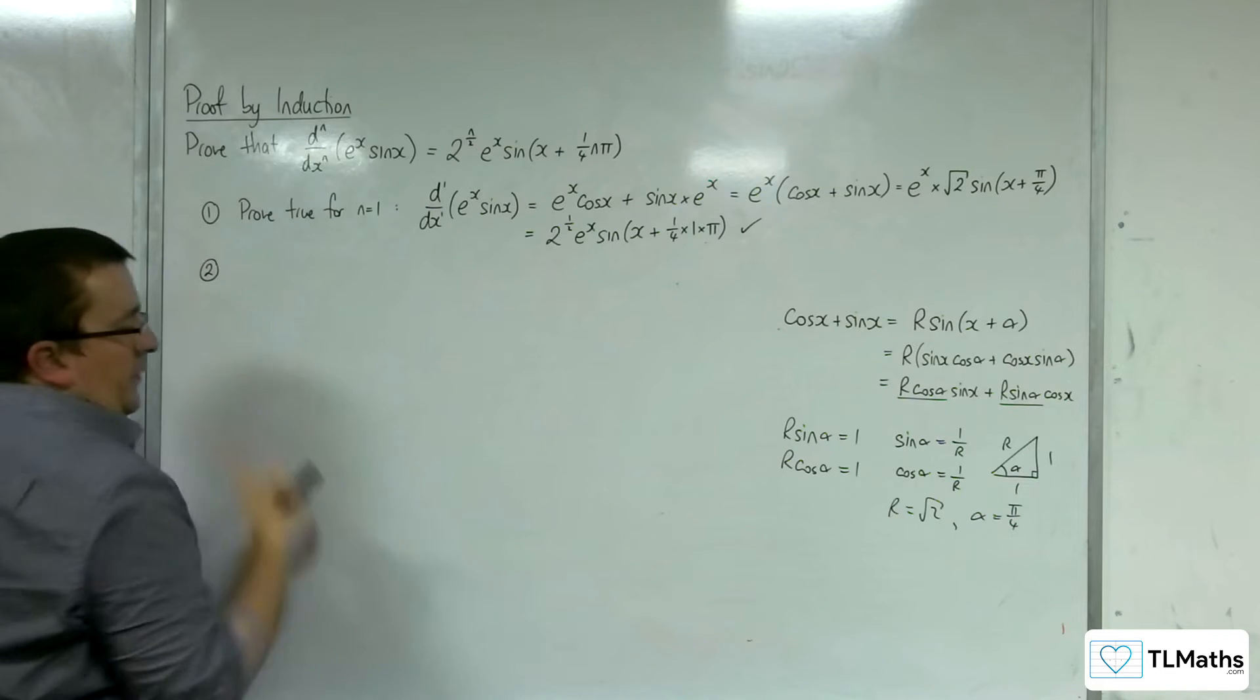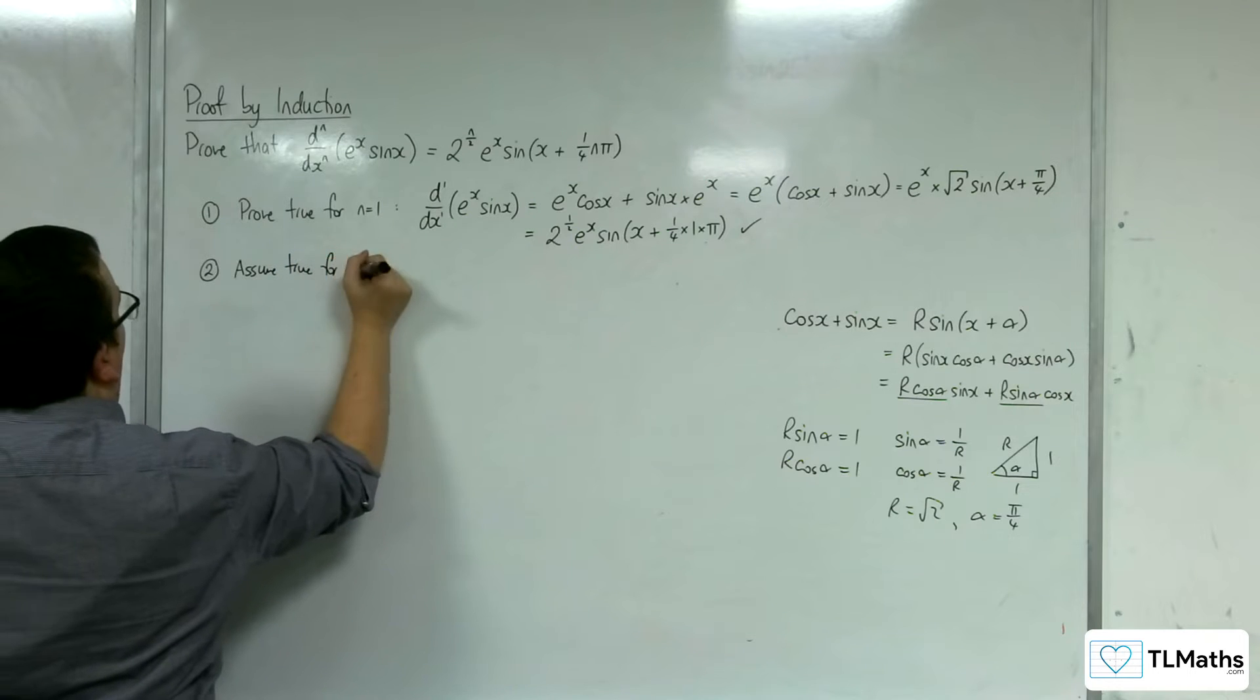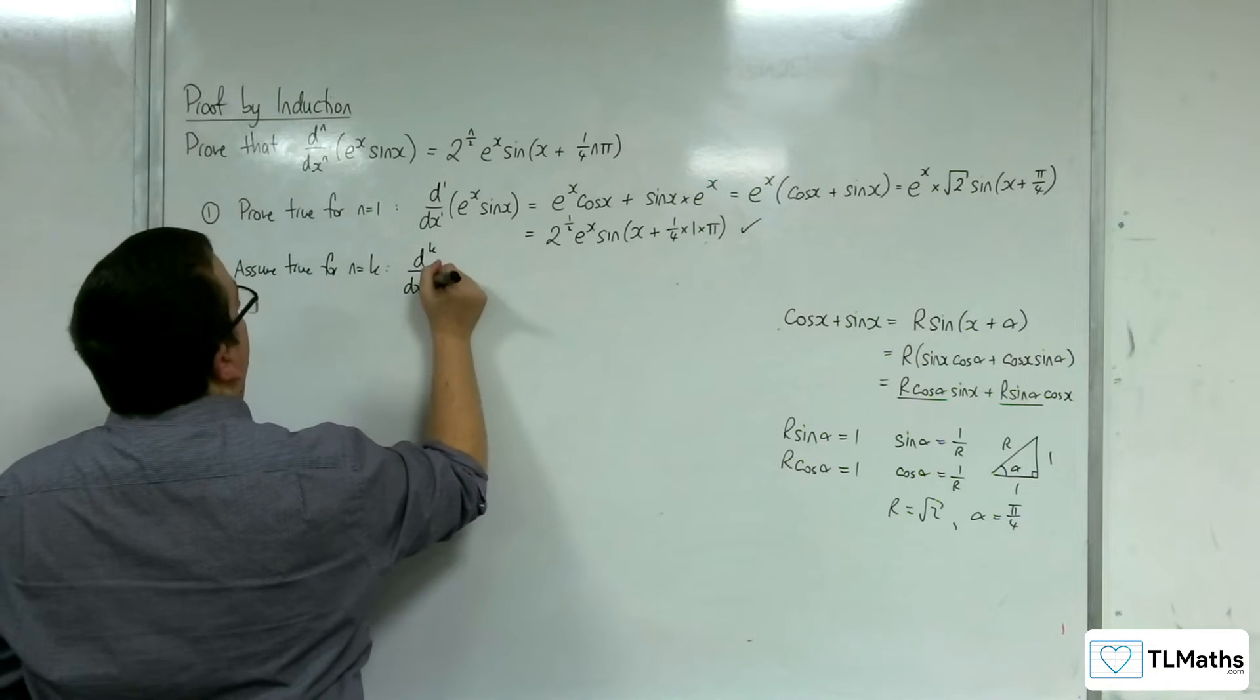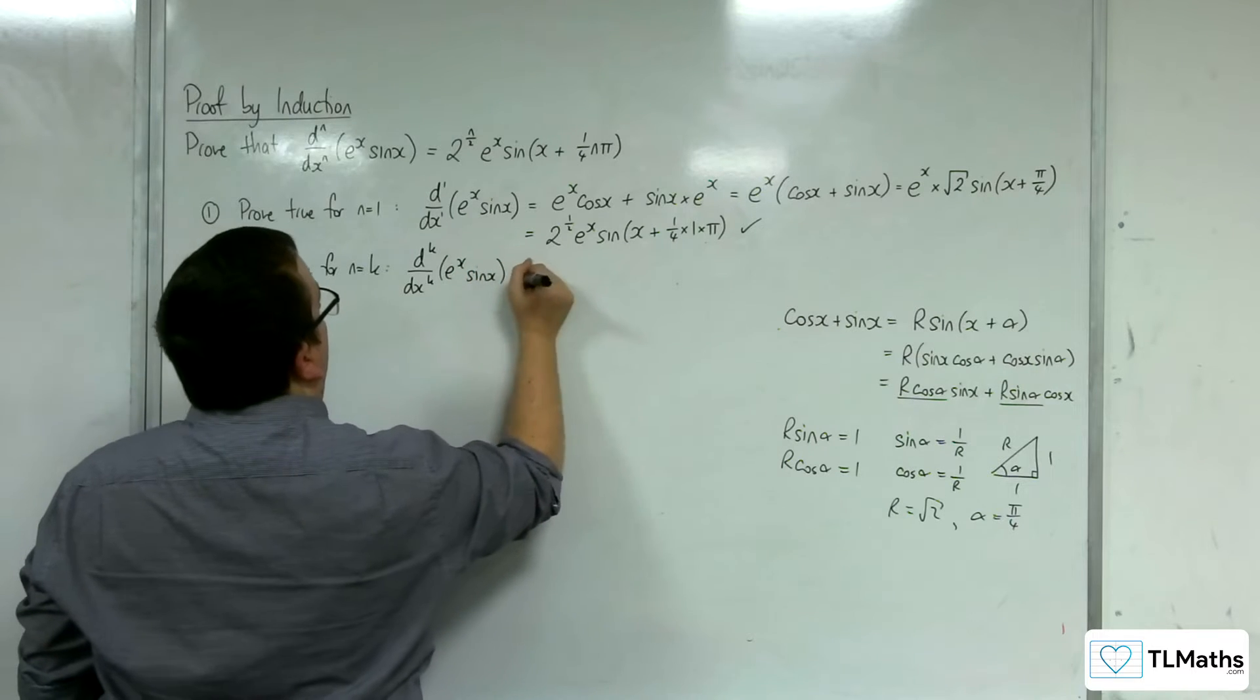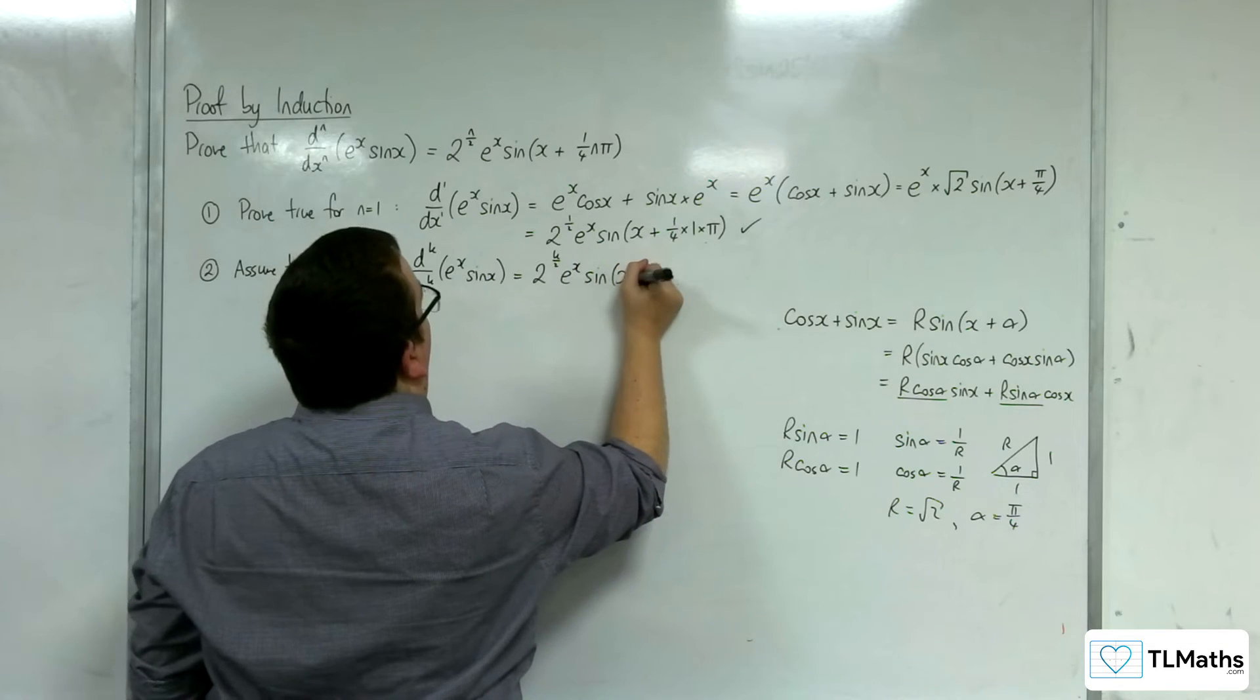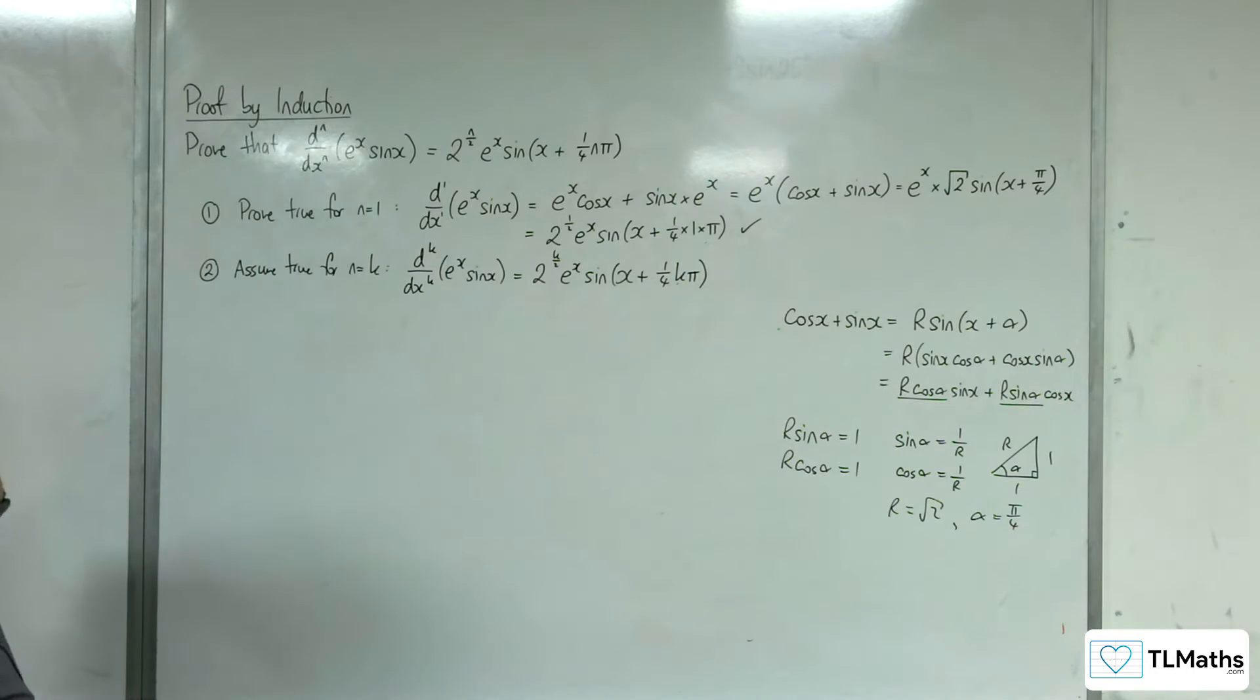So step 2. We assume true for n equals k. So that means that the kth derivative of e to the x sine of x will be 2 to the power of k over 2 e to the x sine of x plus 1 quarter k pi.